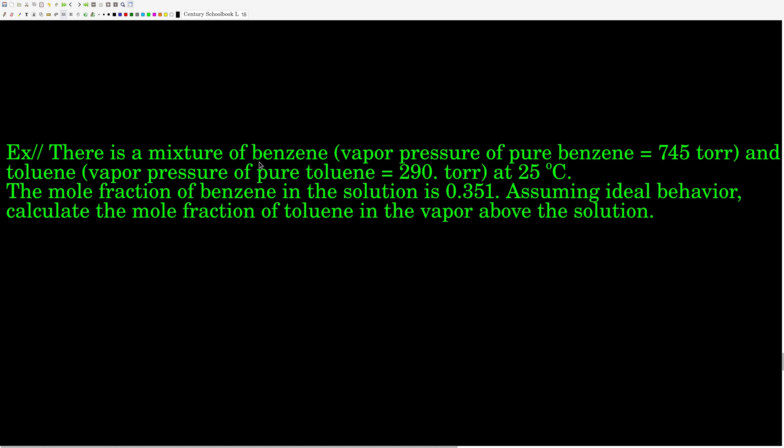Let's use the modified form of Raoult's Law in an example. We have a solution that's a mixture of benzene and toluene. We're given the vapor pressure of pure benzene and pure toluene at 25°C, and the mole fraction of benzene in the solution. Assuming ideal behavior, we want to calculate the mole fraction of toluene in the vapor above the solution. We have to be careful to distinguish between the solution and the vapor — the mole fraction of toluene in the vapor phase will not be the same as in the solution.